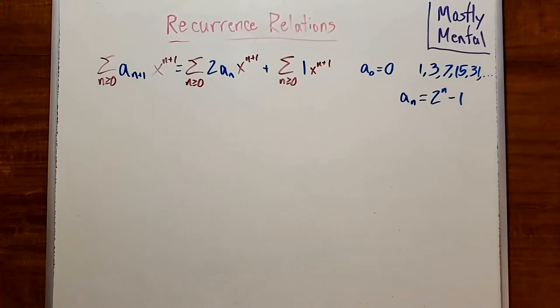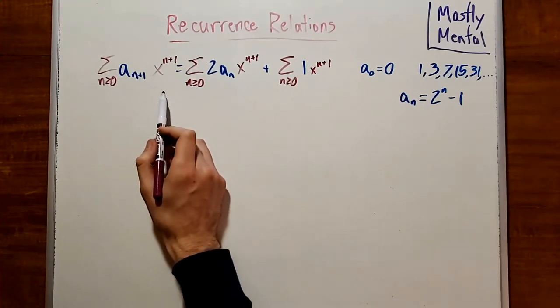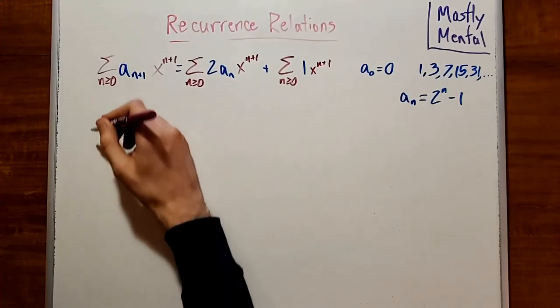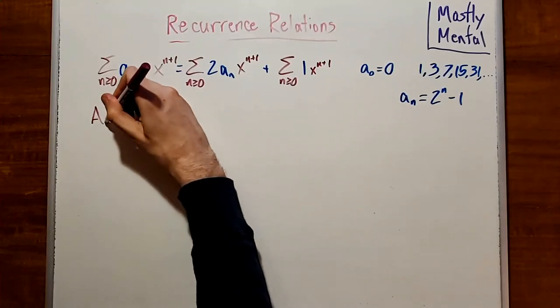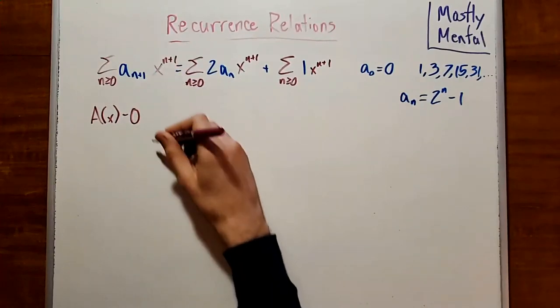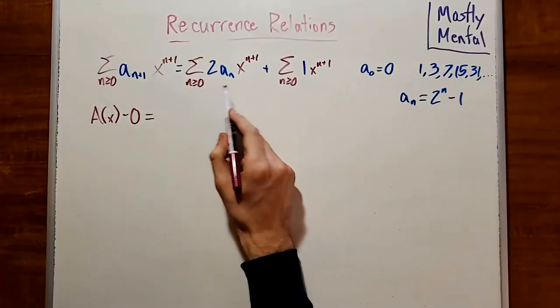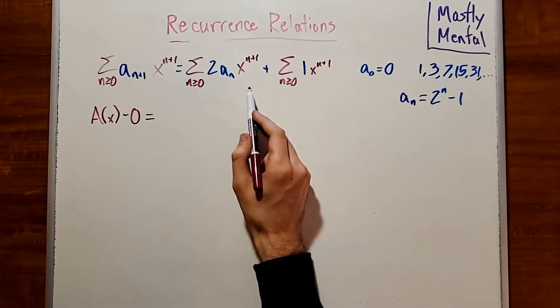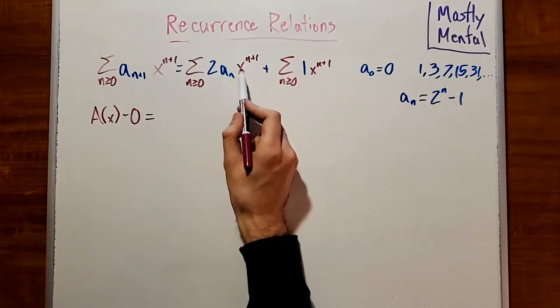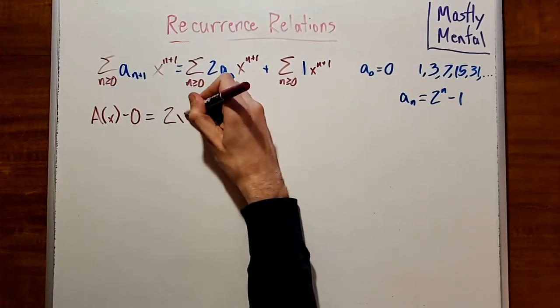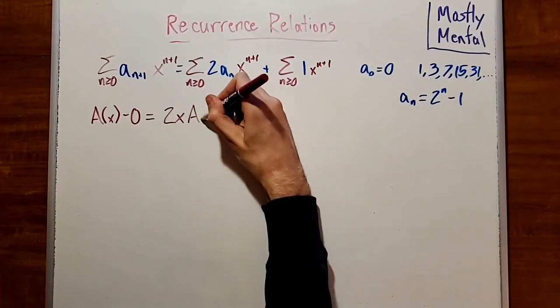This first sum here is almost A(x), but it starts with the a_1 x to the first term. And so that means that it's A(x) minus a_0, which we know is 0. This next term is also almost A(x), but it's got an extra factor of 2 and an extra factor of x in it. So if we factor those out, we get 2x times A(x).